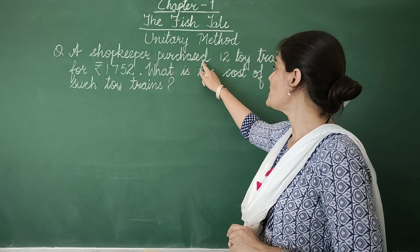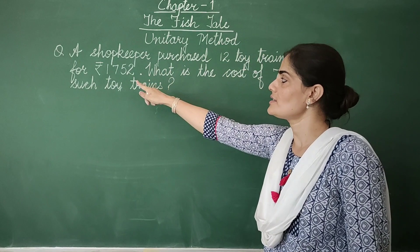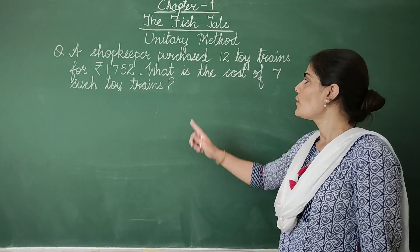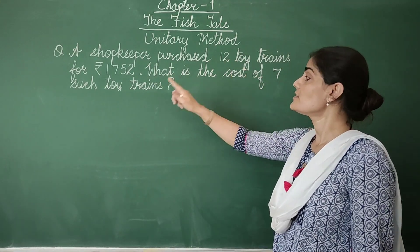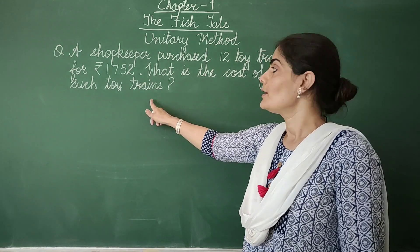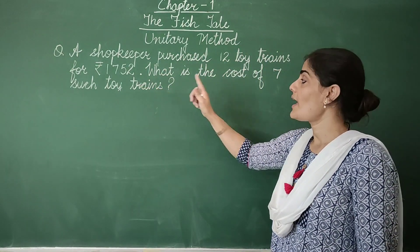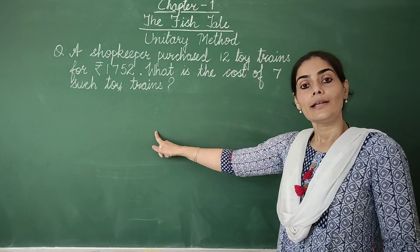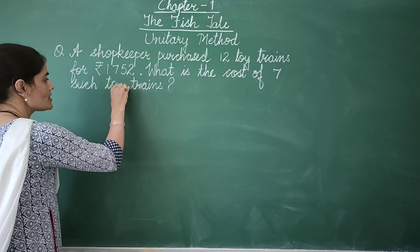A shopkeeper purchased 12 toy trains for rupees 1752. What is the cost of 7 such toy trains? Now the given information is for 12 toy trains and they are asking for 7 toy trains. Let's see how we are going to do this question.